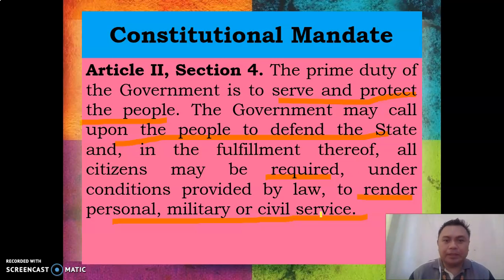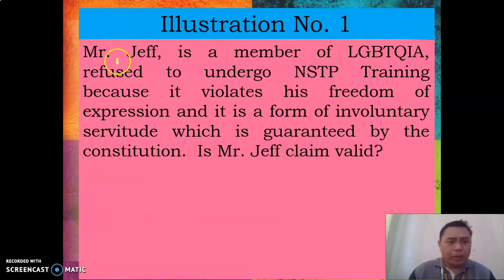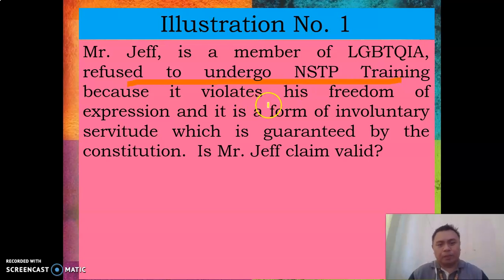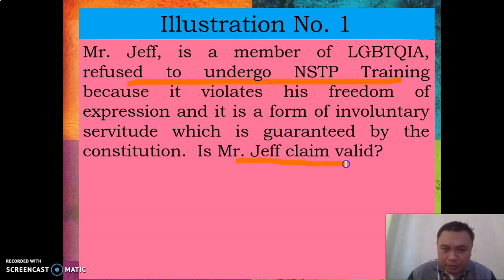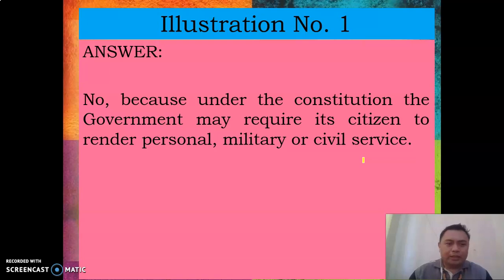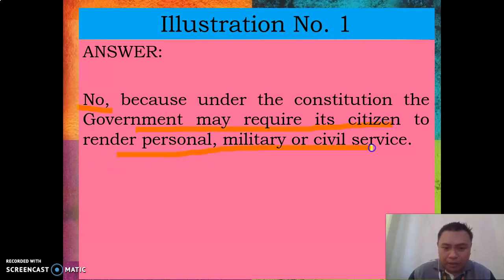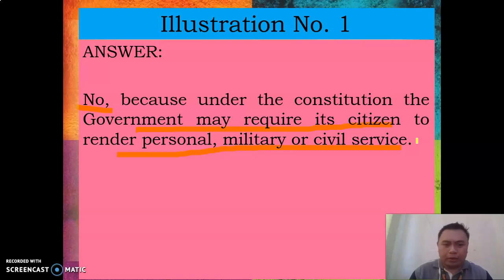Illustration number one: Mr. Jeff is a member of the LGBTQIA community. He refuses to undergo NSTP training because it violates his freedom of expression and is a form of involuntary servitude guaranteed by the Constitution. Is Mr. Jeff's claim valid? The answer is no, because under the Constitution the government may require its citizens to render personal military and civil service. That is why you are required to undergo NSTP.